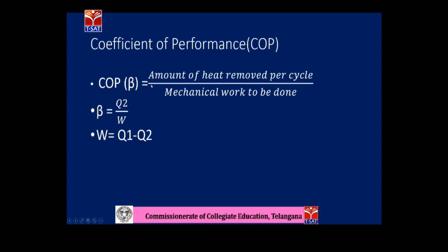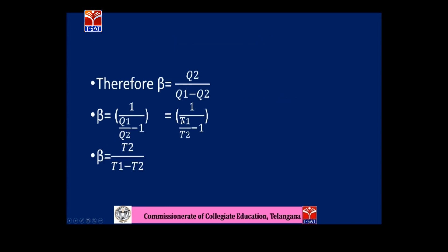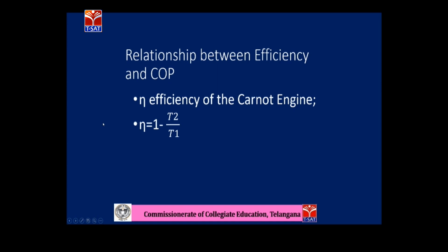The efficiency of a refrigerator is described by the coefficient of performance β. β is defined as the ratio of heat removed per cycle Q2 to the mechanical work done W, where W = Q1 − Q2. Therefore β = Q2 / (Q1 − Q2), which rearranges to β = 1 / (Q1/Q2 − 1) = T2 / (T1 − T2). The Carnot engine efficiency is η = 1 − T2/T1. These are related by β = (1 − η)/η. In domestic refrigerators, food and ice act as the cold reservoir, the surroundings as the hot reservoir, and the working substance is generally Freon.